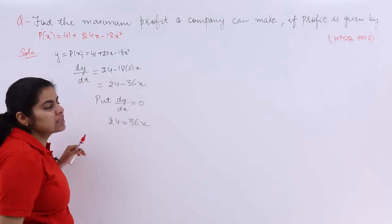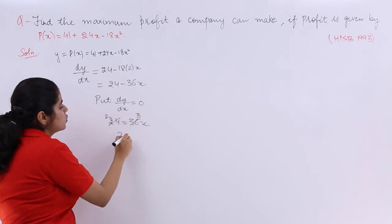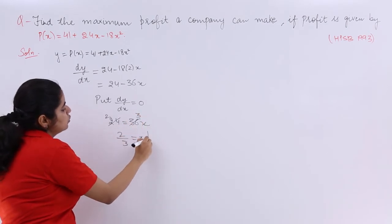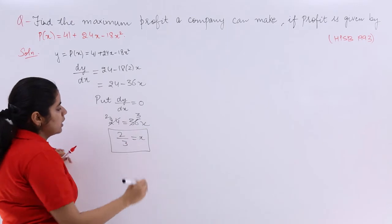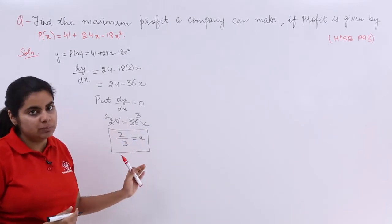Right, so it goes on the table of 12 directly, so 2/3 = x. Now 2/3 is x but we do not know whether this value is giving me maximum or minimum.